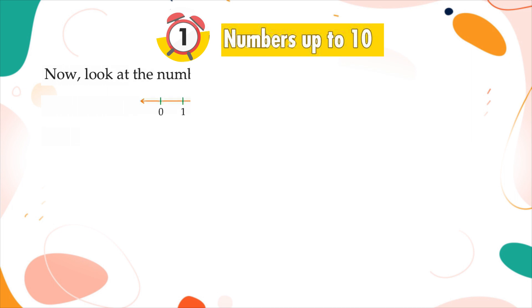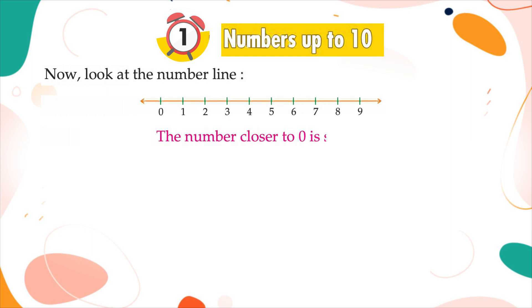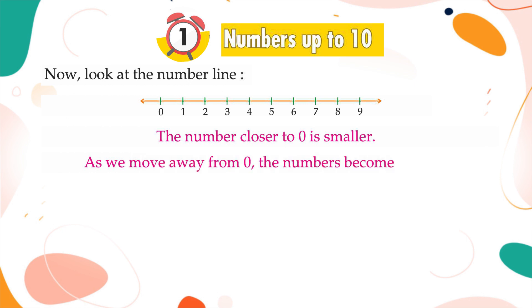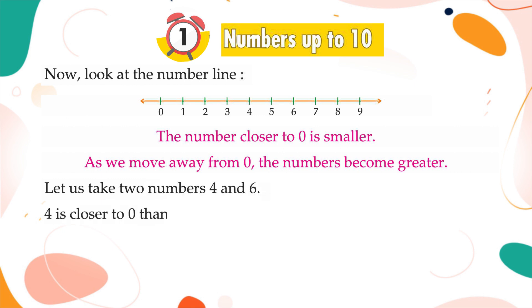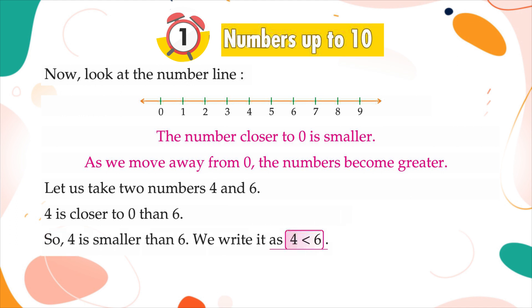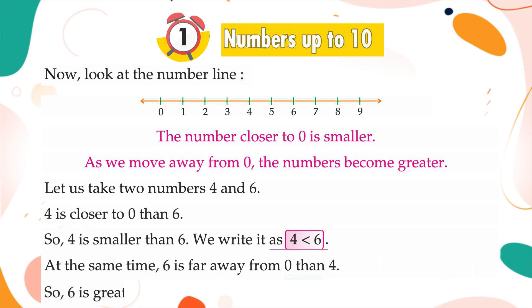Now look at the number line. The number closer to zero is smaller. As we move away from zero, the numbers become greater. Let us take two numbers, four and six. Four is closer to zero than six, so four is smaller than six. We write it as four smaller than six. At the same time, six is farther from zero than four, so six is greater than four. We write it as six greater than four.